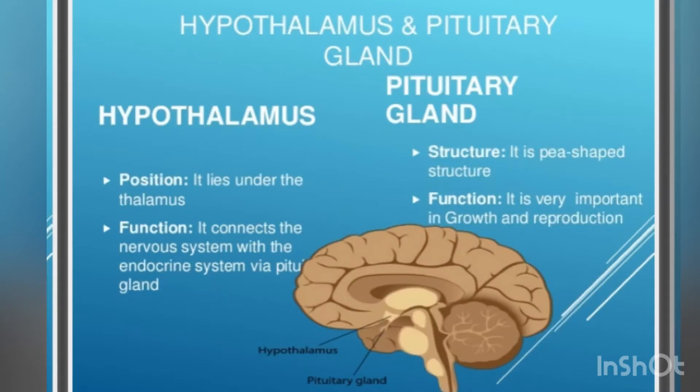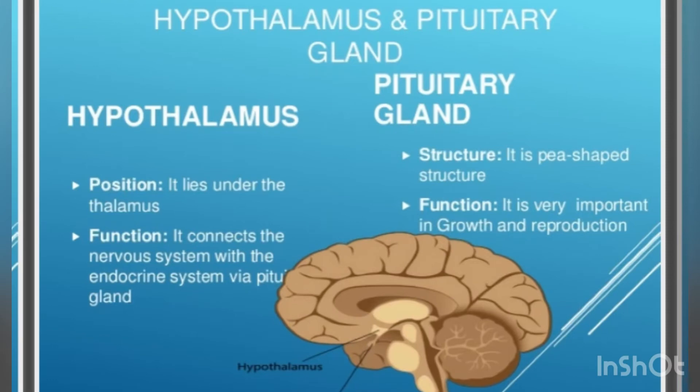Hypothalamus and pituitary gland. Hypothalamus position: it lies under the thalamus. Function: it connects the nervous system with the endocrine system via the pituitary gland.